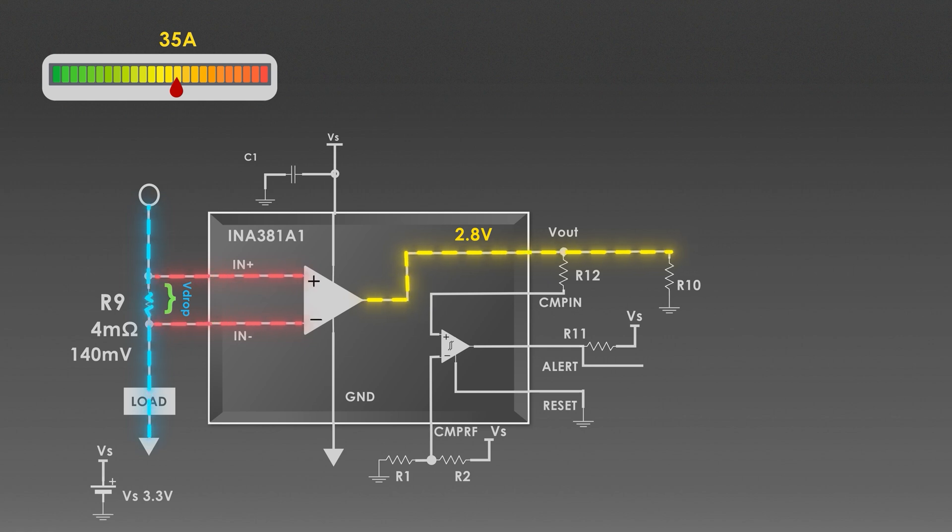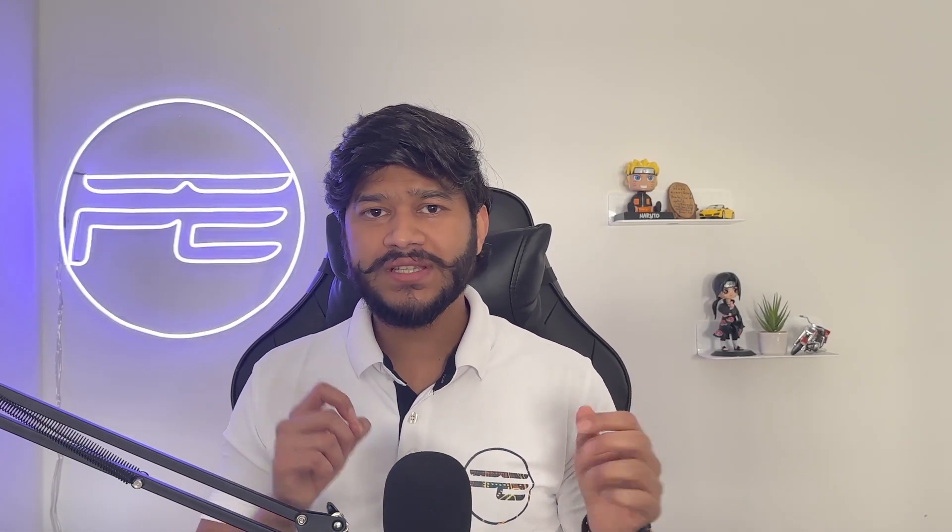This amplified voltage is fed into the comparator section of the amplifier. From our amplifier, 2.8 volts means 35 Amperes. We need to provide an alert if this current goes to this level. That means, our comparator should also have some reference to give this alert.